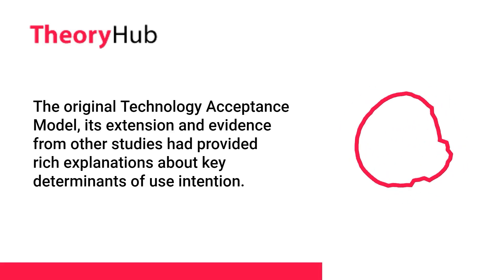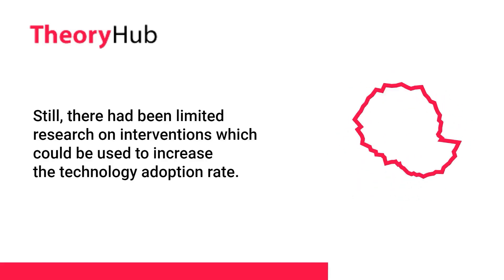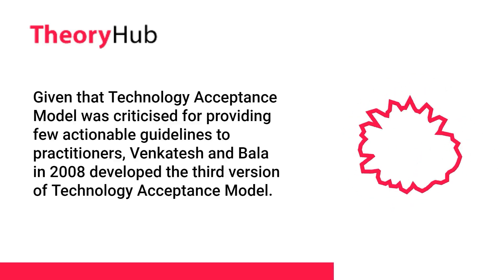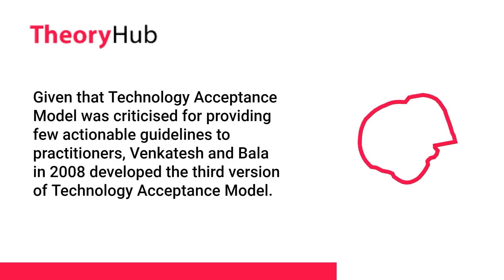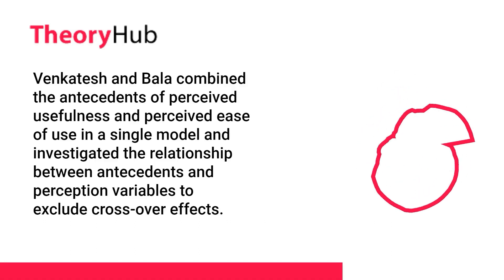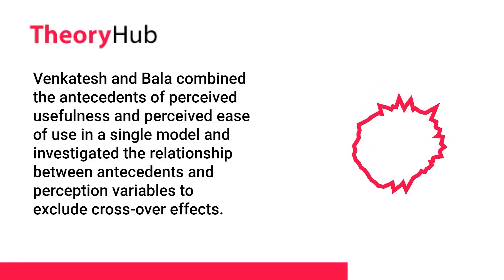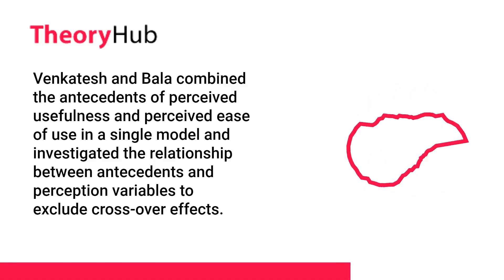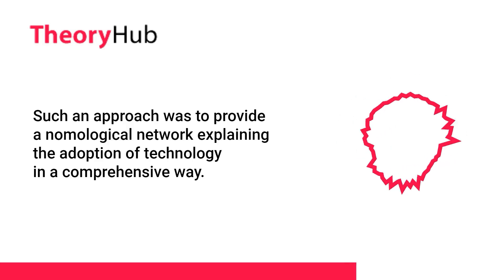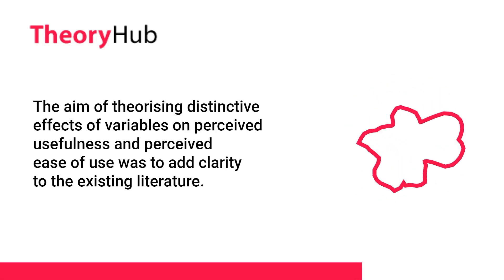The original Technology Acceptance Model, its extension, and evidence from other studies had provided rich explanations about key determinants of use intention. Still, there had been limited research on interventions which could be used to increase the technology adoption rate. Given that the Technology Acceptance Model was criticised for providing few actionable guidelines to practitioners, Venkatesh and Bala in 2008 developed the third version of the Technology Acceptance Model. They combined the antecedents of perceived usefulness and perceived ease of use in a single model, investigating the relationship between antecedents and perception variables to exclude crossover effects. This approach aimed to provide a nomological network explaining the adoption of technology in a comprehensive way.